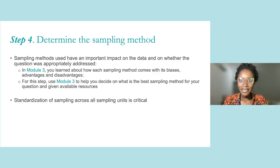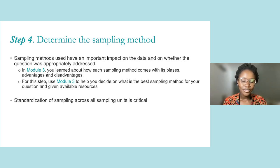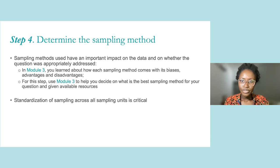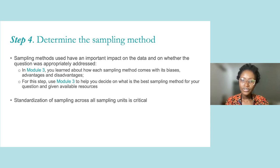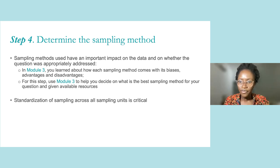Now it's time to confirm your sampling method. You may have done this already as part of Module 3. If not, I encourage you to watch the Module 3 video now, and then come back to Module 5 once you have finished. As discussed in Module 3, sampling methods determine whether the priority program question is correctly addressed. Each sampling method comes with its biases, advantages, and disadvantages. For Step 4 of Module 5, use Module 3 to help you decide the best sampling method for your question, and remember to consider the available resources. Use this opportunity to verify that your chosen sampling method fits with your plan. It is very important to ensure the sampling method chosen is standardized across all sampling units — for example, if the method involves human collections such as the human landing catch method, it is important that all collectors be trained in the same way.